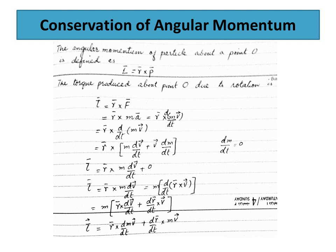L equals r cross P. The torque is the cross product of position vector and force. We differentiate L with respect to time: dL/dt equals d/dt of r cross mv. Since this is a product of two quantities, expanding the derivative gives r cross M dV/dt plus V cross M dr/dt.